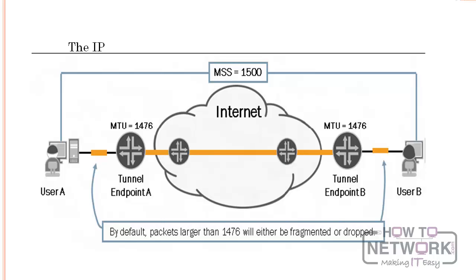The host receiving fragmented packets is responsible for reassembling the fragments back into their original packet. IP fragmentation involves breaking a packet into several pieces that can later be reassembled. The IP source, destination, identification, total length, and fragment offset fields, along with the more fragments and don't fragment flags in the IP header, are used for IP fragmentation and reassembling.